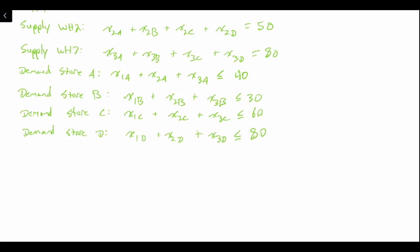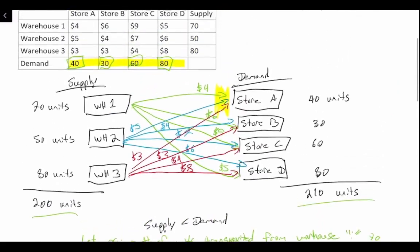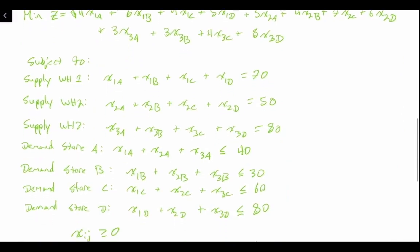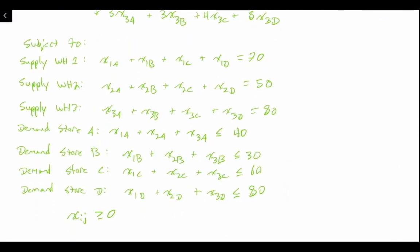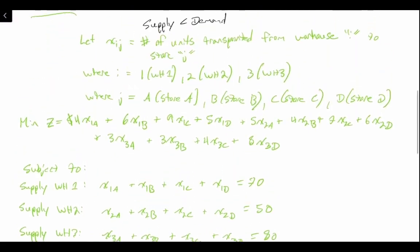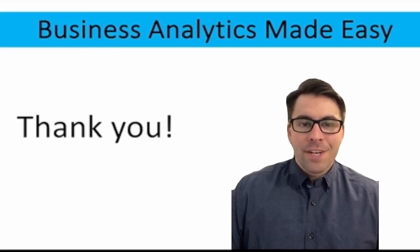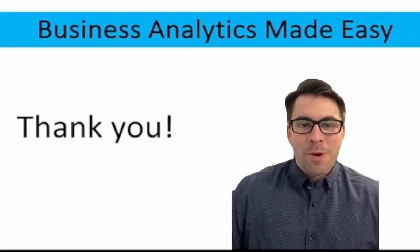Our last constraint is that x-sub-ij must be greater than or equal to zero — that's our non-negativity constraint. So we've mapped out our network diagram, written our objective function, identified our decision variables, and written our constraints. What's left is to solve this in Excel, which we will do in the next video. Thanks for watching — if this helped make business analytics easy, consider giving the video a like and subscribing to the channel.